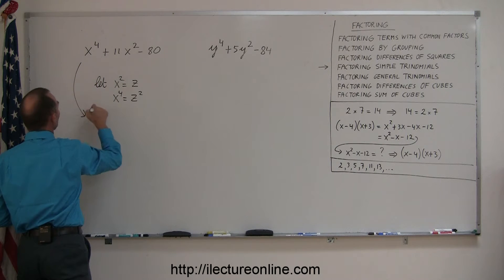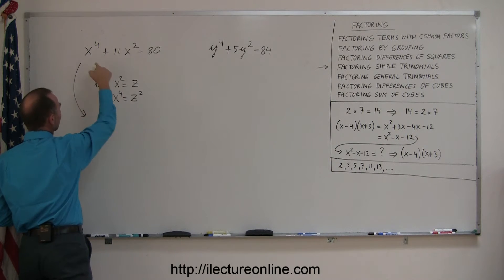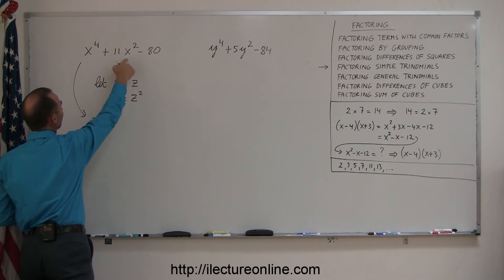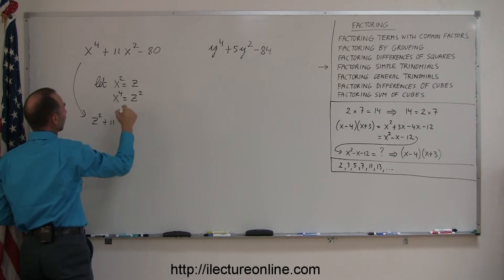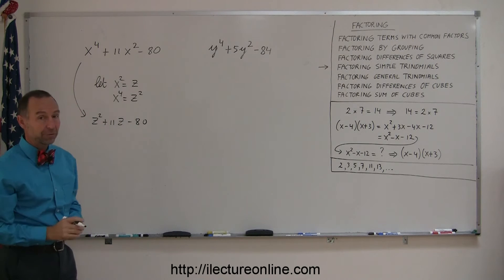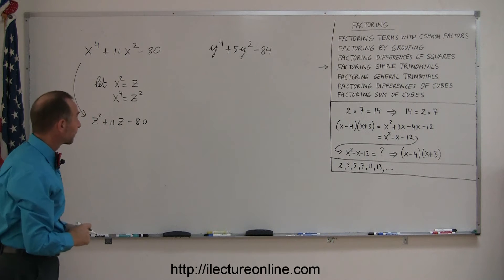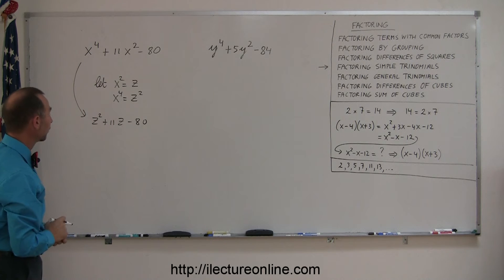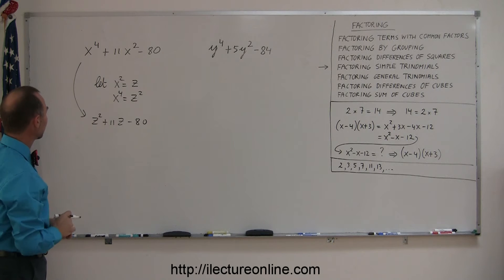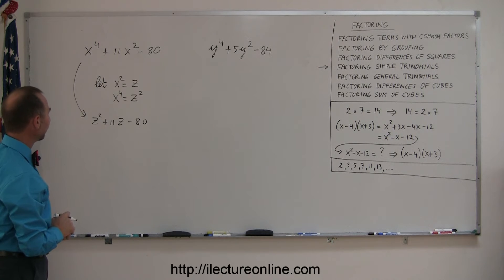So let's do that. Let's rewrite x to the fourth as z squared, plus 11, and instead of x squared we're going to write z. Now you end up with something that looks a lot more familiar, and that one you can factor. Later on we'll substitute back.